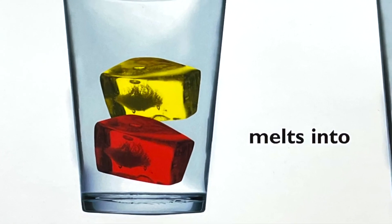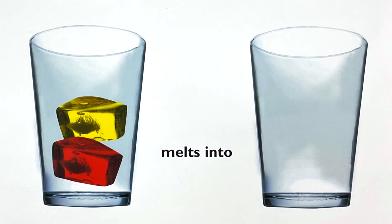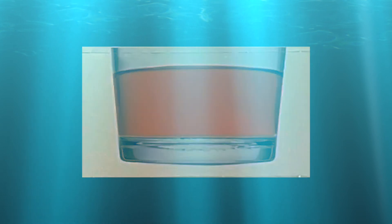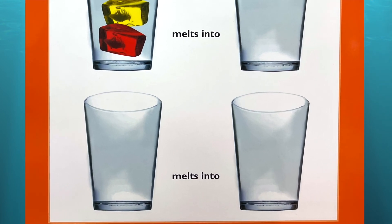melt and mix together. What color water will they turn into? When you mix red and yellow, you get orange. Now make up your own mix and melt puzzle. Look at